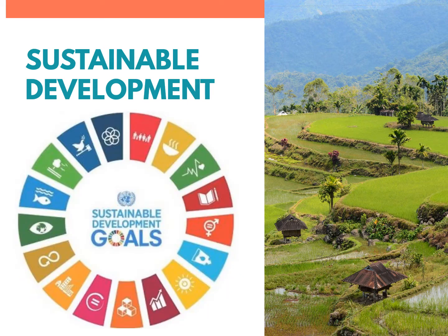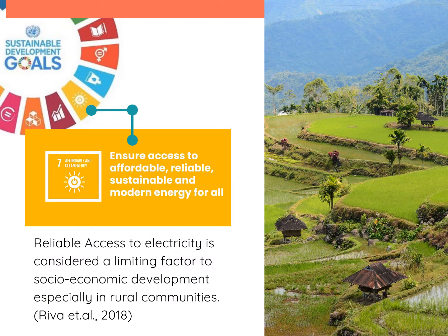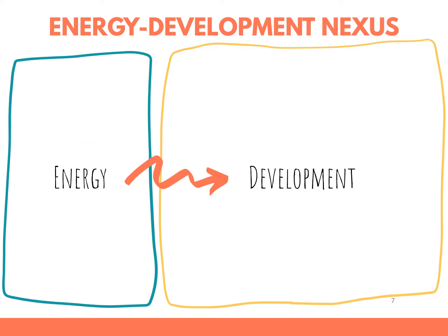To provide more context, in 2015, the United Nations provided the 2030 Agenda for Sustainable Development, and at its core are the 17 Sustainable Development Goals, or SDGs. One SDG is to ensure access to affordable, reliable, sustainable, and modern energy for all, giving emphasis to the importance of energy in attaining sustainable development. In fact, Riva et al. argued that reliable access to electricity is a limiting factor to socioeconomic development in rural communities. That is why we must accurately model out the energy development nexus to achieve a more reliable energy plan and sustainable development.